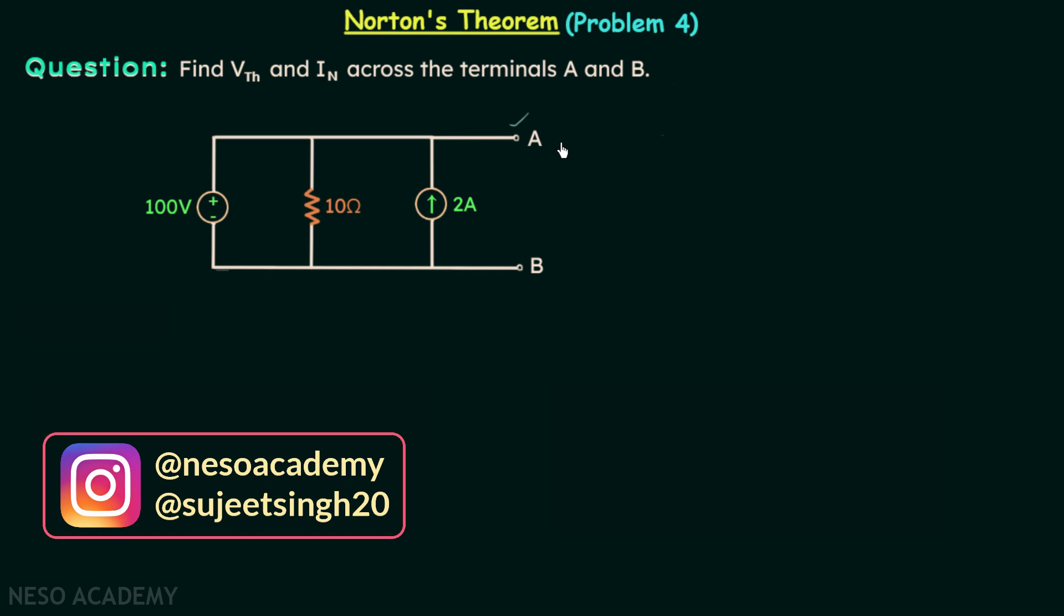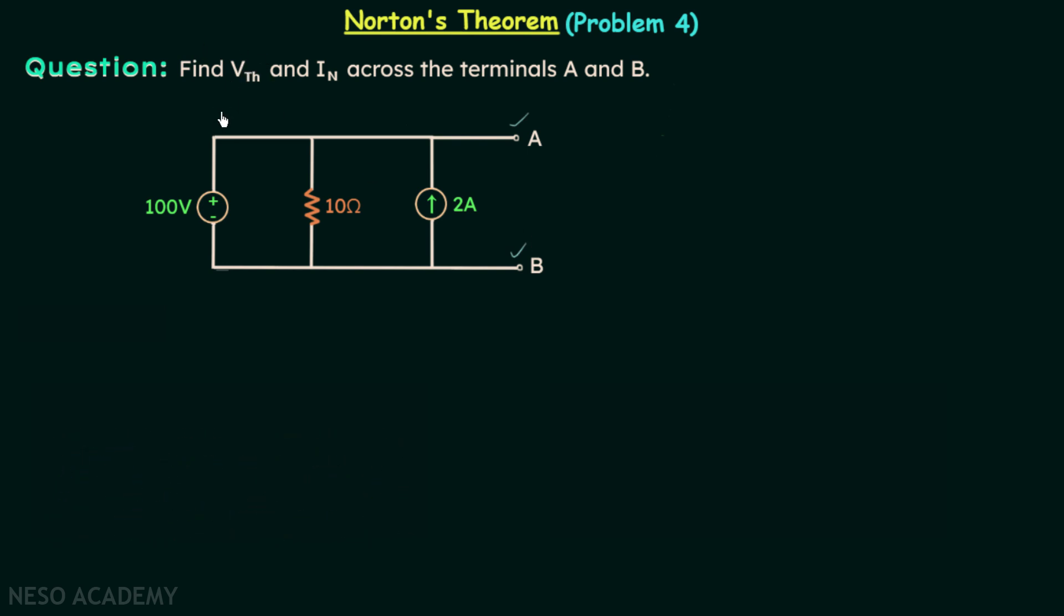This is terminal A and this is terminal B. Across the two terminals, we need to find Vth, which is Thevenin's equivalent voltage, and In, which is Norton's equivalent current. The question is very simple to understand. Out of Vth and In, we will first find Vth.